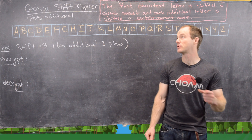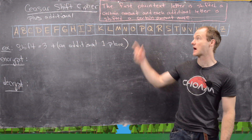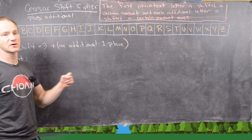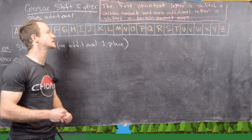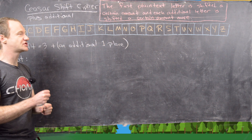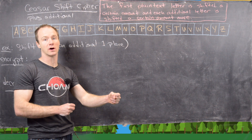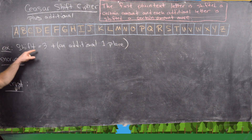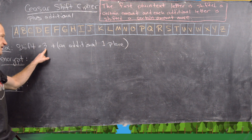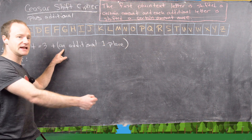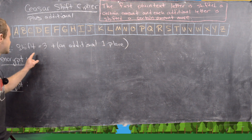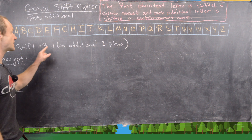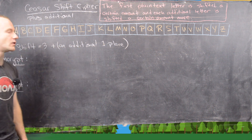The next cipher is a play on the Caesar shift cipher — I'll call it the Caesar shift cipher plus additional. The rule is that the first plain text letter is shifted a fixed amount, and then each additional letter is shifted that amount plus some more, adding up those additional shifts as you move forward. In our example, the first letter is shifted 3 units, and each subsequent letter is shifted one additional place — so the second letter shifts 4 units, the third shifts 5, and so on.